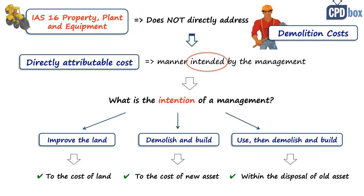Unless you previously accounted for a provision for removal costs under IAS 37, that's a separate matter. You should also be careful that the demolition occurs within a reasonable time after acquisition in order to prove the original intention. For example, if you acquired the land and building in 2016, did nothing, and then in 2018 decided to demolish the building and sell the land, it becomes questionable whether demolition was truly the original intention and whether you can treat it as a land improvement. Why did such a long time pass between acquisition and demolition?